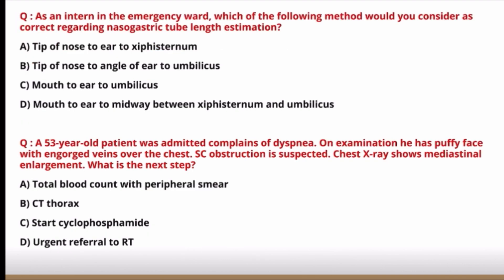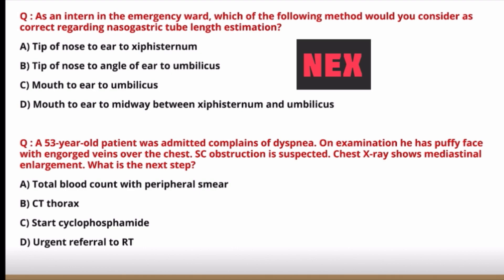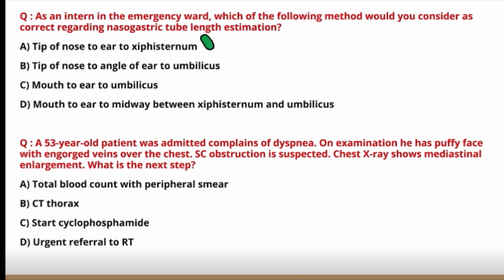Next question: as an intern in the emergency ward, which method is correct for nasogastric tube length estimation? Options are: tip of nose to ear to xiphisternum; tip of nose to angle of ear to umbilicus; mouth to ear to umbilicus; mouth to ear to midway between xiphisternum and umbilicus. The formula to remember is the NEX method — N for nose, E for ear, X for xiphisternum. Option A is the correct answer.